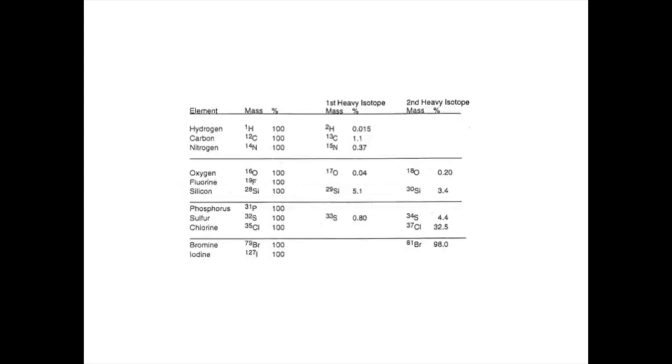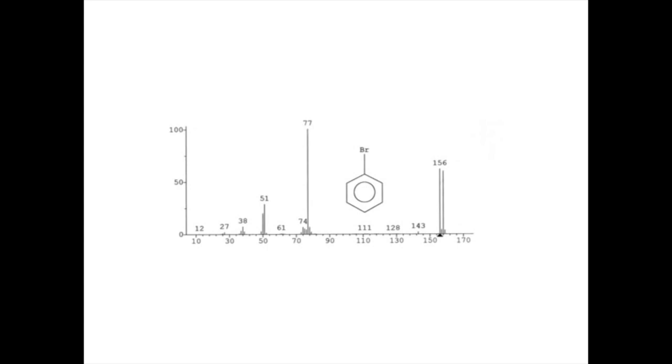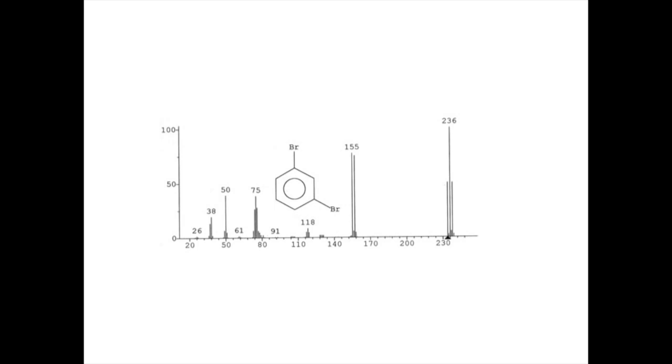Notice that bromine is also a special case. Its population is a nearly one-to-one mixture of isotopes with mass 79 and mass 81. This fact also leads to an unmistakable signature in the mass spectrum. Here we see the molecular ion at 156 units and a peak two units higher with almost the same intensity. With two bromine atoms in a molecule, the probability is greatest for the molecule to have one heavy atom and one light bromine atom. The pattern looks very much like a triplet in an NMR spectrum. The tall peak at 236 is actually the M plus two peak. Notice the doublet at 155 and 157. This is a strong clue that the fragment at 155 contains one bromine atom.